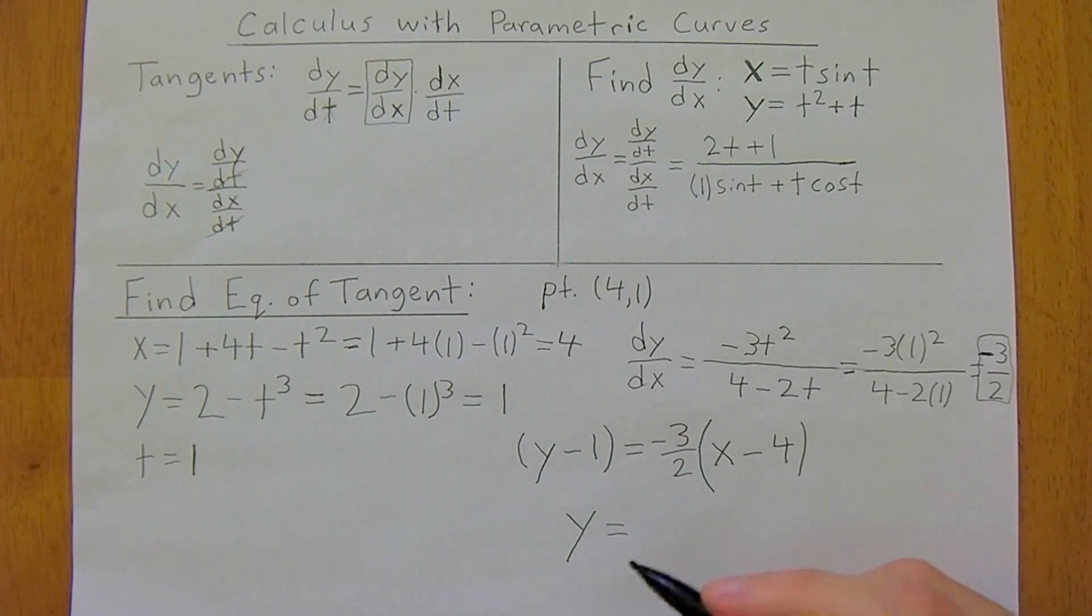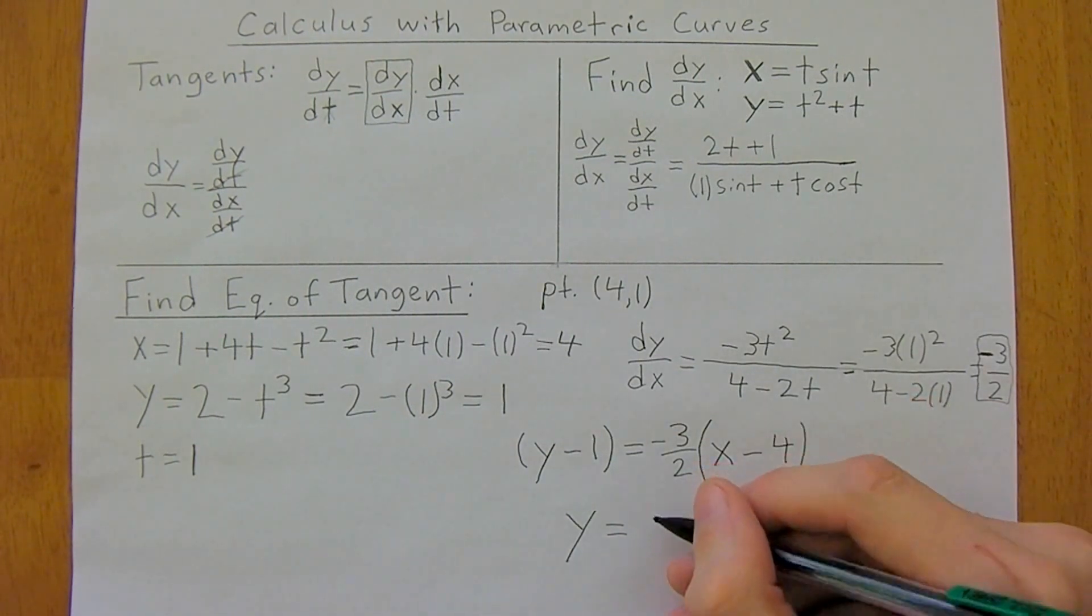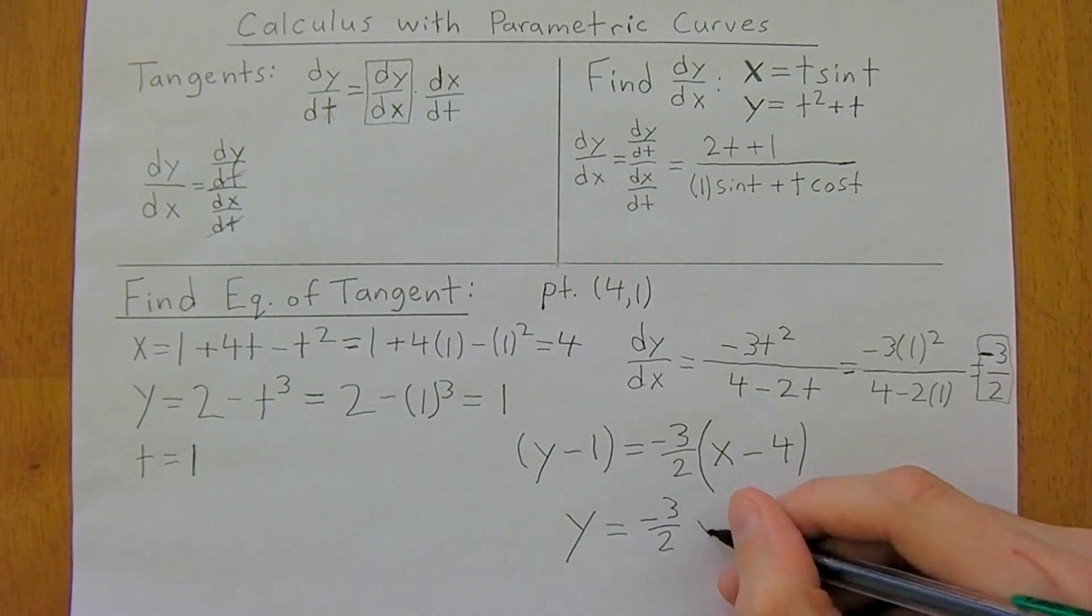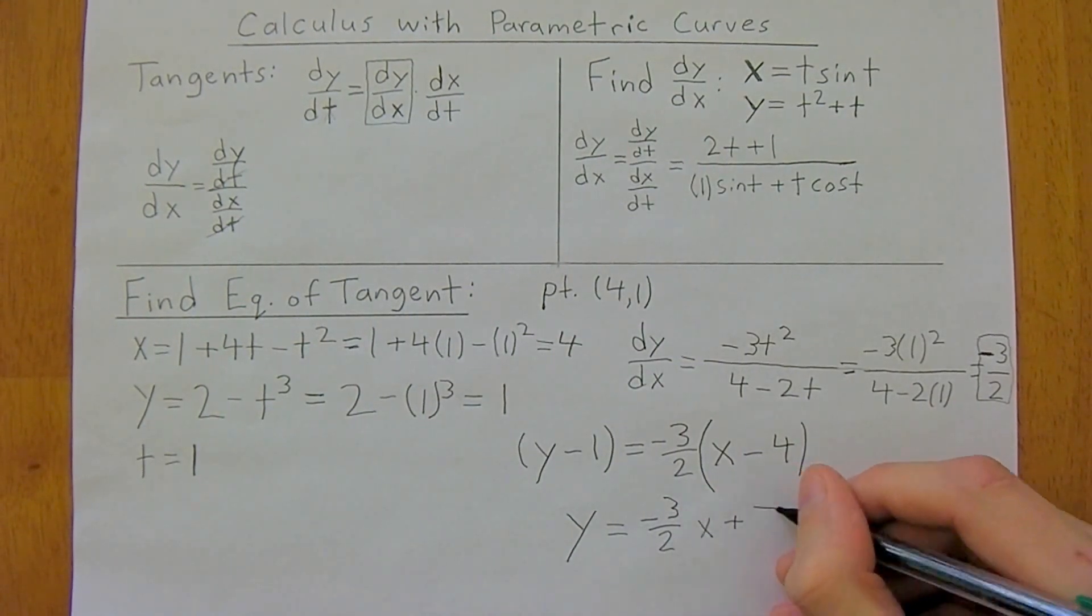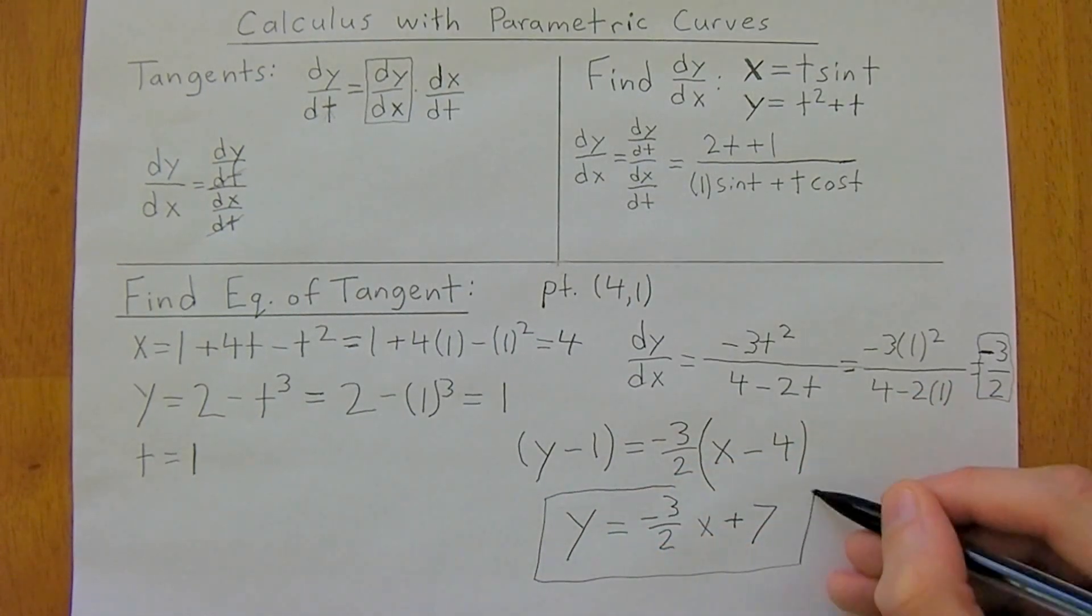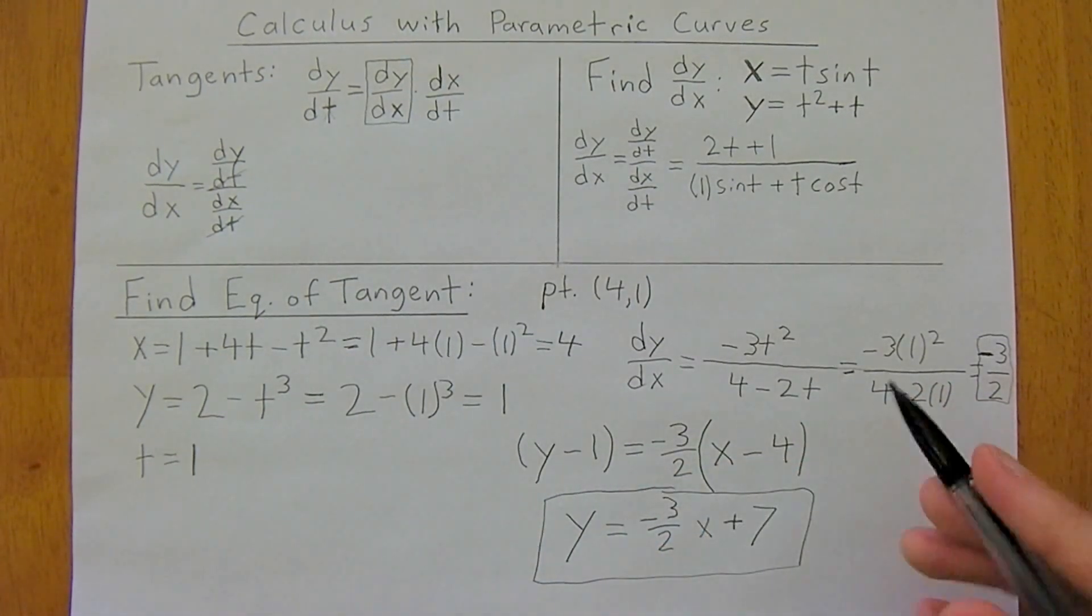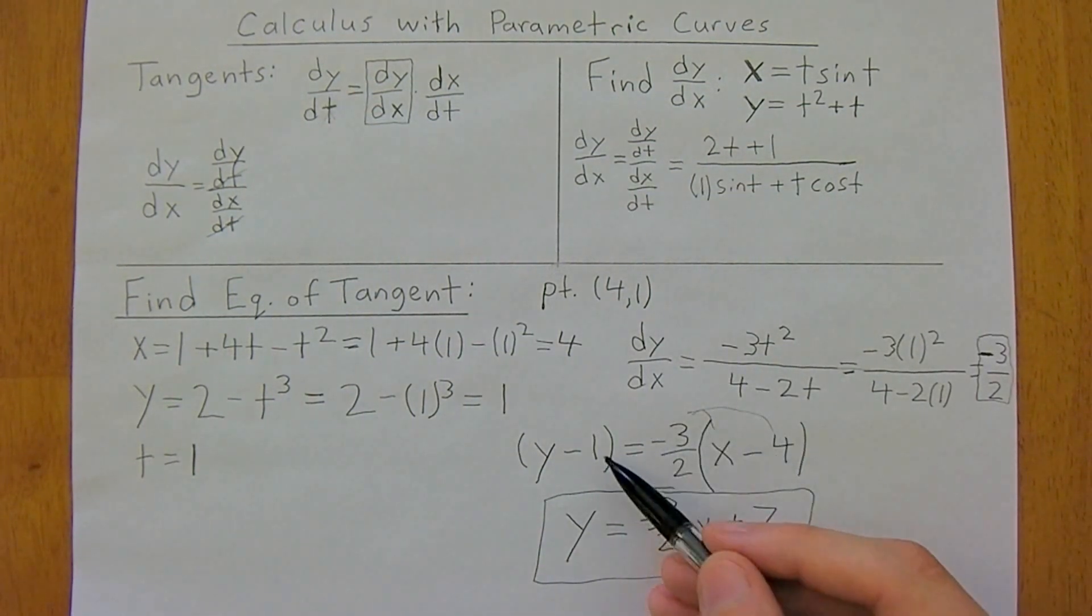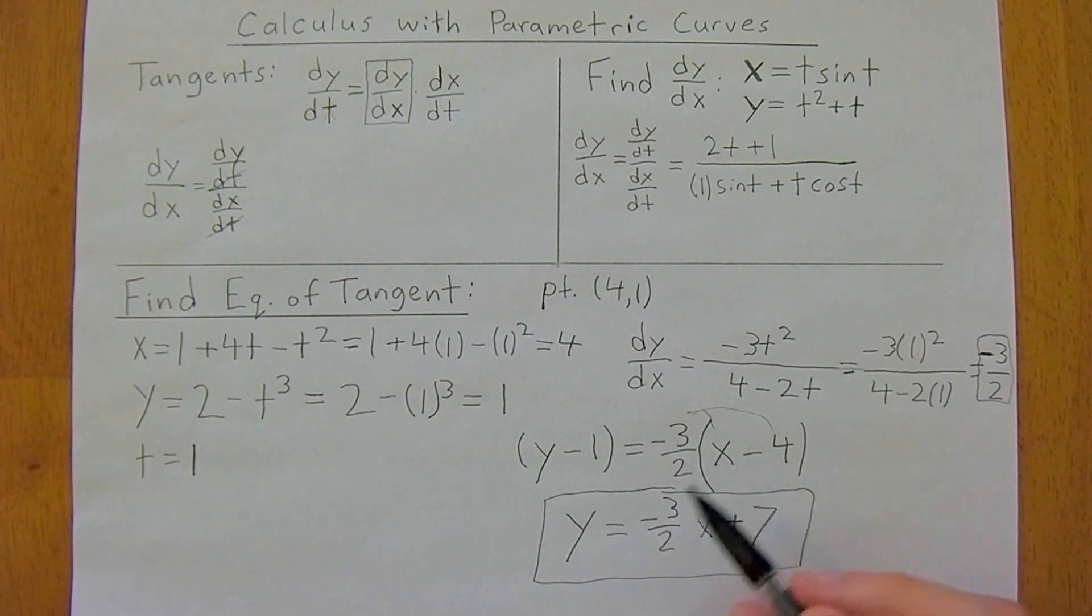So we could also say that y is equal to negative 3x plus 7. So either way you have it is fine. They're both technically equations for lines. But in this case, we just multiplied through and then added 1 to each side.